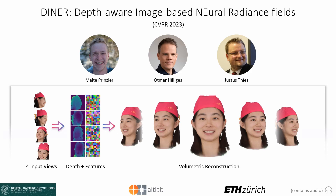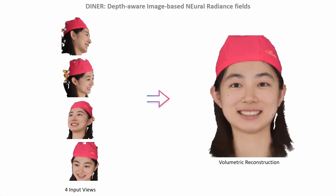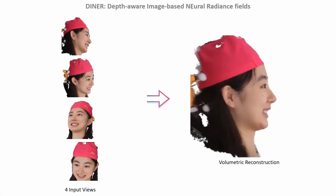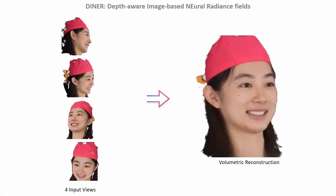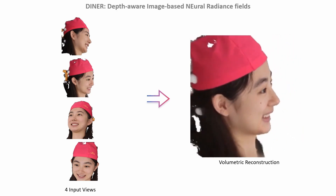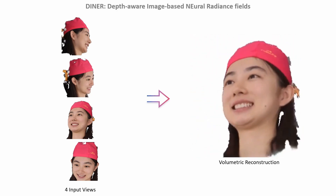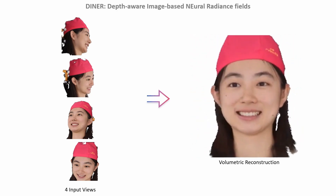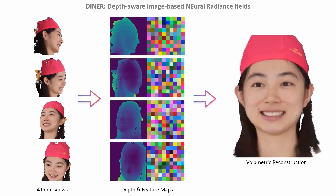We present Depth-Aware Image-Based Neural Radiance Fields, short DINER. Given only four input images, we predict a volumetric scene representation that allows us to render the scene under novel views. Specifically, we predict depth and feature maps from the input images and propose novel techniques to use that information during rendering.